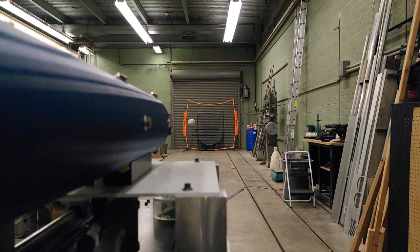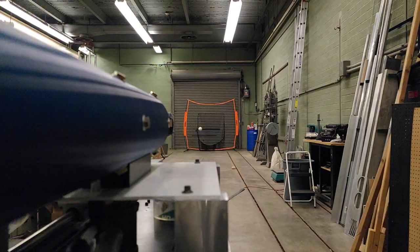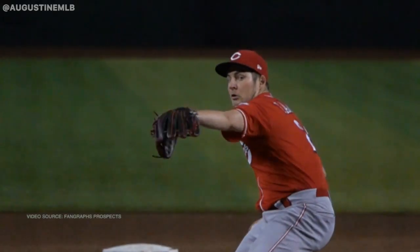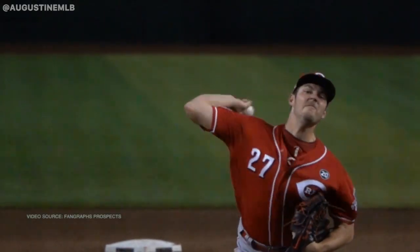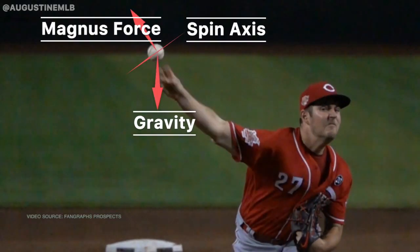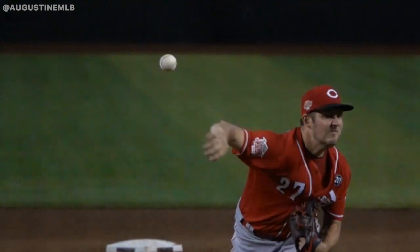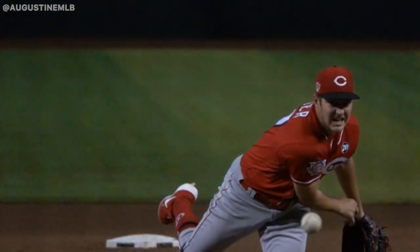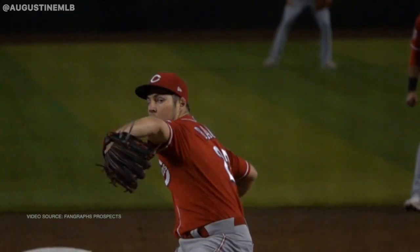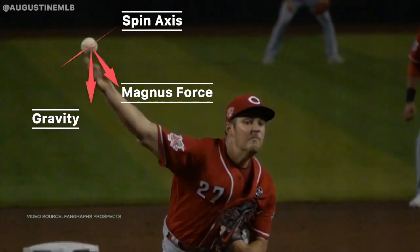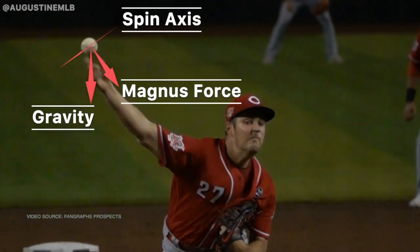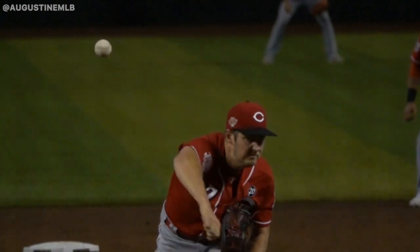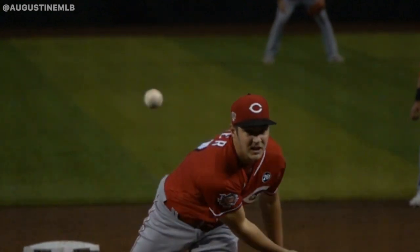So if you throw a fastball like Trevor Bowers here, the front of the ball is moving mostly upward and therefore the Magnus Force is pushing it in the upward direction. On the other hand, for a curveball where the front of the ball is moving mostly downward, the Magnus Force is largely in the downward direction and pushes the ball down.